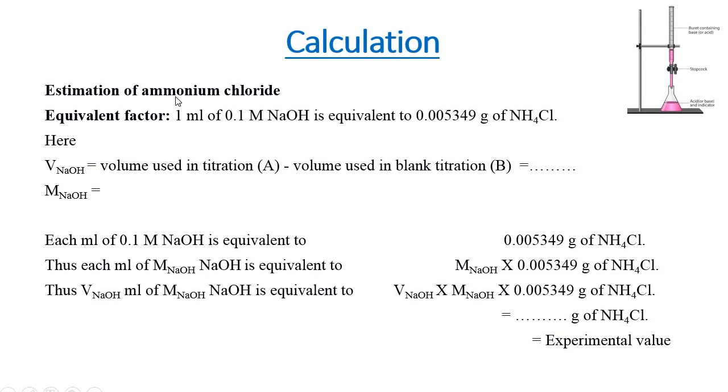Coming to the calculation portion, calculation for the estimation of ammonium chloride. What is the equivalent factor? It is given that 1 ml of 0.1 M NaOH is equivalent to 0.005349 g of NH4Cl. Here, volume of NaOH is equal to the volume used in titration A minus volume used in blank titration B.